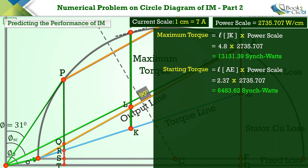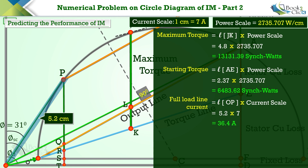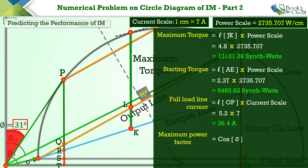To determine the full load line current, multiply the length of line OP by the current scale value. The length of line OP is 5.2 centimeters and the current scale value is 7 amperes per centimeter. The value of full load line current is 36.4 amperes.